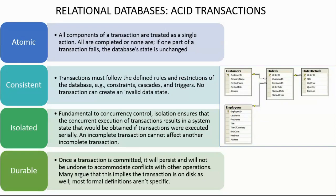Here is a simple relational model with a customers table, employees table, and orders table. The orders table has customer ID and employee ID as foreign keys and order ID as a primary key. The orders table is also tied to an order detail table containing fields like unit price, quantity, and discount — a simple model that exemplifies the important features of a relational schema.